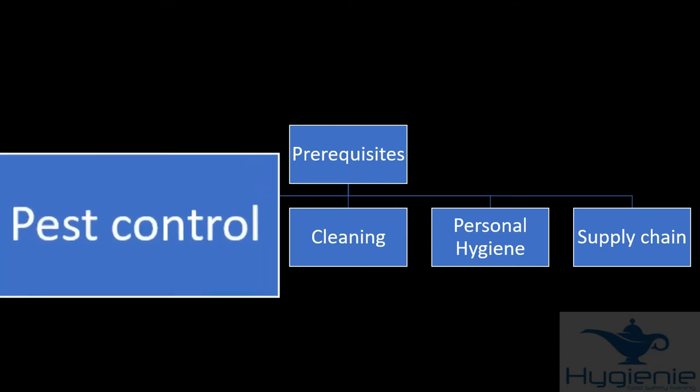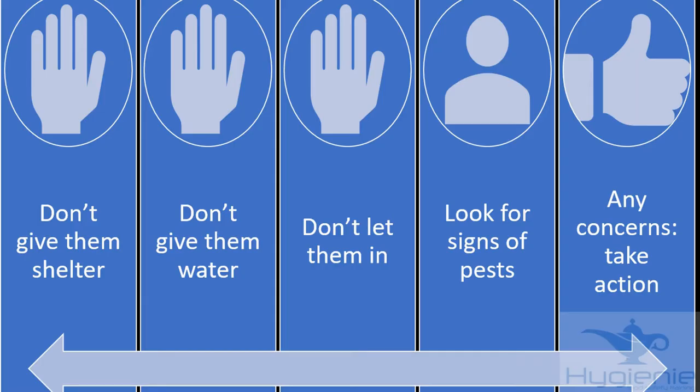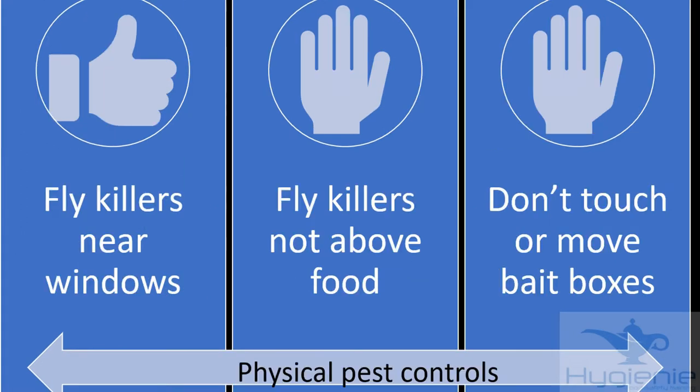To start with, we'll focus on pest control. The basic rules to follow for pests are don't give them shelter, don't give them food or water, look out for signs of pests and if there are any concerns take appropriate action. In terms of physical controls ensure fly killers are near windows and not above food and ensure bait boxes are not touched or moved.